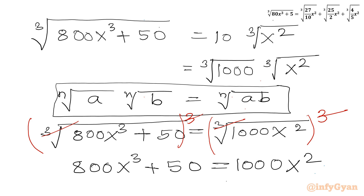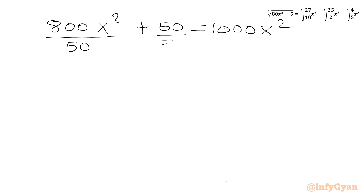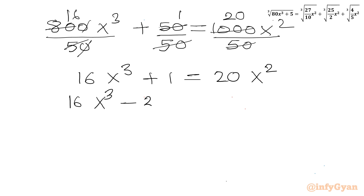This cubic equation is divisible by 50. So let's divide both sides by 50. The equation becomes 16x³ + 1 = 20x², or rearranging all terms to one side: 16x³ − 20x² + 1 = 0. Let's use the rational root theorem and synthetic division method.